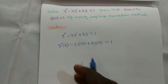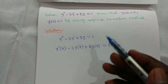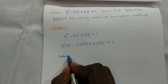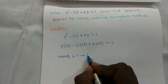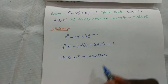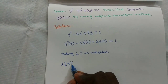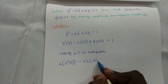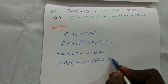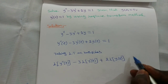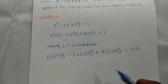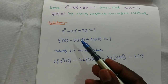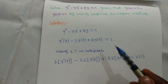To solve this differential equation, we apply Laplace transform on both sides: L of y double dash of t minus 3 times L of y dash of t plus 2 times L of y of t equal to L of 1. We take the Laplace transform of each and every term.